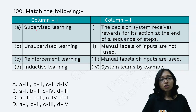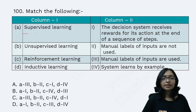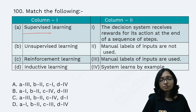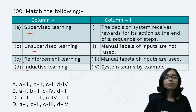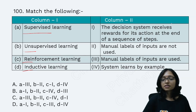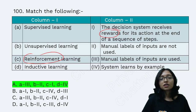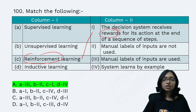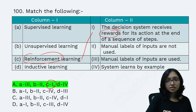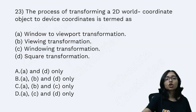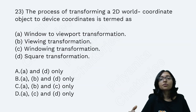This is a popular match-the-column question on supervised learning, unsupervised learning, reinforcement learning, and inductive learning. The answer maps reinforcement learning with rewards and punishment, so C matches with 1. Prepare short notes on these trending questions as they are very important.